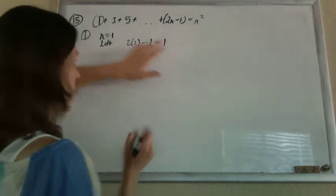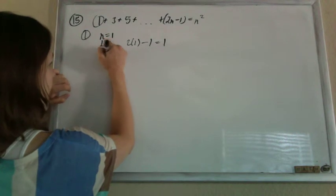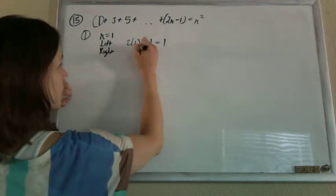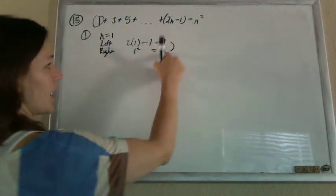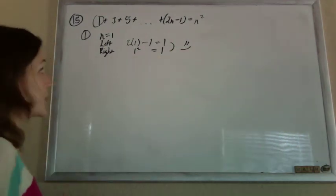So it doesn't have to be 1, but whatever it is, it has to match what's on the right. So 1 squared is 1. They match, we're happy. So it works when n is 1.